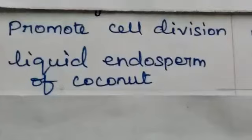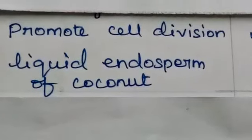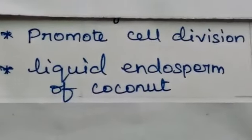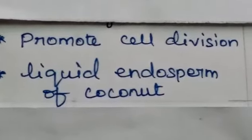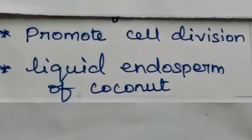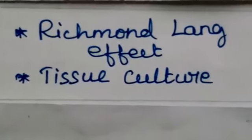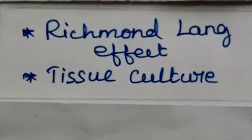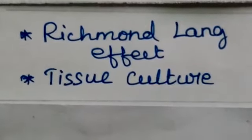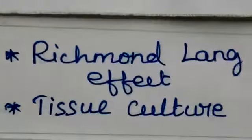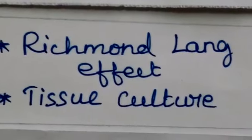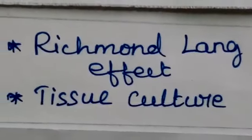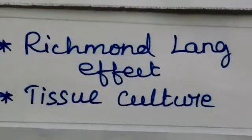Cytokinin promotes cell division in plants and is abundantly present in the liquid endosperm of coconut. The Richmond-Lang effect states that application of cytokinin delays the process of aging in plants. Both auxin and cytokinin are essential for the formation of new organs from the callus in tissue culture.